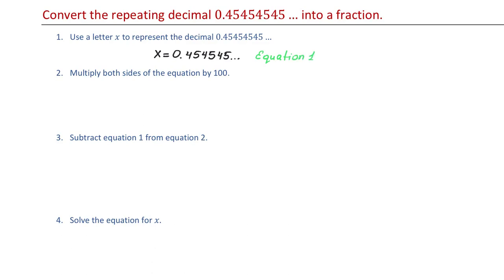In step 2 we will multiply both sides of this equation by 100. So let's write the equation one more time. X equals 0.45 repeating. And we will multiply the left side by 100 and the right side by 100.